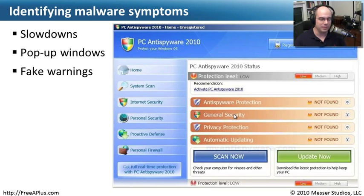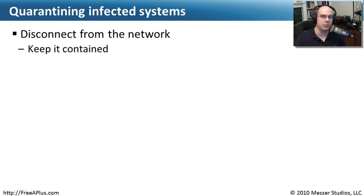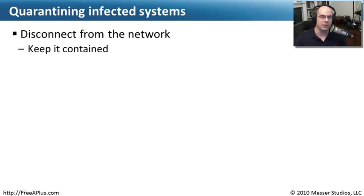If somebody is having slowdowns, pop-up messages, or they may be infected with something like PC Anti-Spyware 2010, we need to start the process for getting rid of it. When we identify that somebody has spyware on the system, one of the first things we should do is quarantine the system — make sure it does not connect to anyone else. That's how we're getting all this spyware and malware these days. We don't want this spyware hopping over to another person's machine or having someone connect to an infected share on our device.